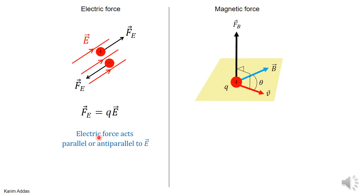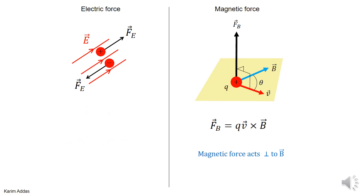Another difference: the electric force acts parallel or anti-parallel to the electric field. For a positive charge, the electric force is in the same direction as the electric field. For a negative charge, the electric force is opposite the electric field. What about the magnetic force? The magnetic force is always perpendicular to the field, because when you take the cross product between V and B, the cross product is always perpendicular to both vectors, so the force is always perpendicular to the magnetic field.